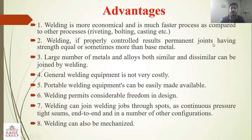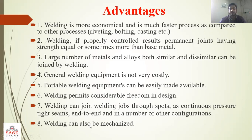Welding is more economical and is a much faster process as compared to other processes like riveting, bolting, casting, etc. Welding, if properly controlled, results in a permanent joint having strength equal to or sometimes more than the base metal. A large number of metals and alloys, both similar and dissimilar, can be joined by welding. General welding equipment is not very costly. Portable welding equipment can be easily made available. Welding permits considerable freedom in design. Welding jobs can be done through spots or as continuous pressure-tight seams, end-to-end, and in a number of other configurations. Welding can also be mechanized.